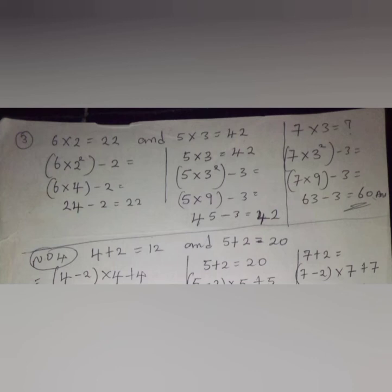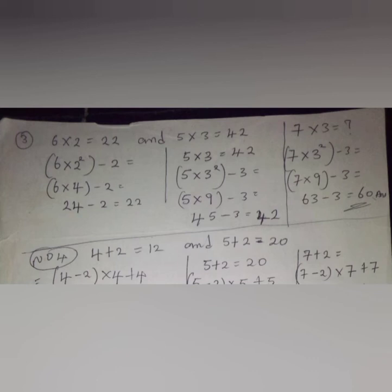For 5 times 3 equals 42: the second number is 3, raise it to the power of 2, then subtract that same number. It becomes 5 times (3² − 3) = 5 times (9 − 3) = 5 times ... actually 5 times 9 = 45, minus 3 = 42. So for 7 times 3: it's 7 times (3² − 3) = 7 times (9 − 3) = 7 times 9 = 63, minus 3 = 60. The rule is: raise the second number to power 2, multiply by the first number, then subtract the second number.